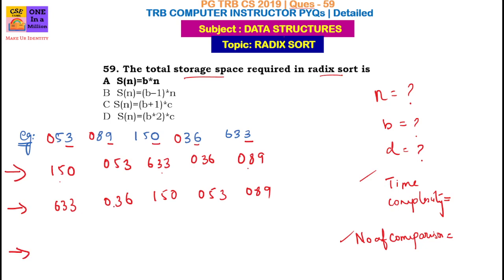Next, we compare at the hundreds place. If we compare at the hundreds place, we compare with zero elements. The elements are: 1, 36, 0, 53, 0, 89. So that gives us 150633.